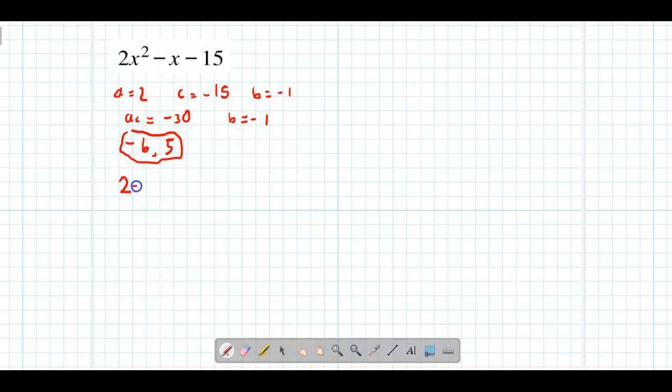What I mean is we're going to rewrite the quadratic as 2x² - 6x + 5x - 15. If you simplify that, you'll get back to where you started with minus x. This is what splitting the middle term is.